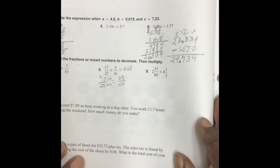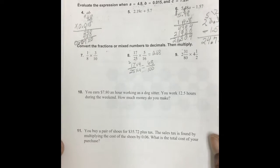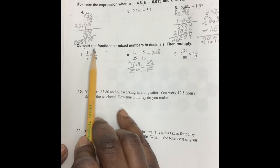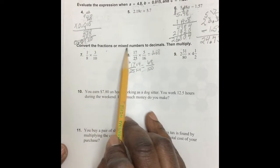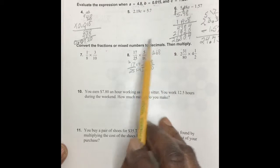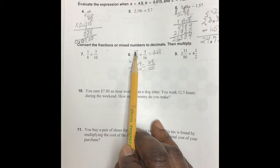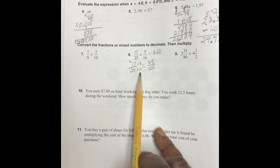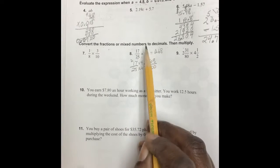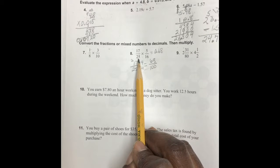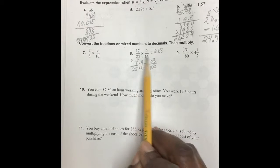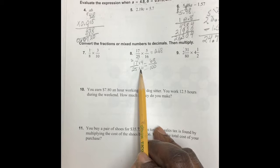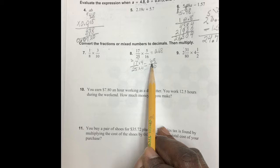All right, from there we are asked to convert our fractions or mixed numbers to decimals and then multiply. Well, we know that we can take 17 divided by 25 to get our decimal, or because 25 times four is a hundred, then we can multiply the numerator and the denominator by four.